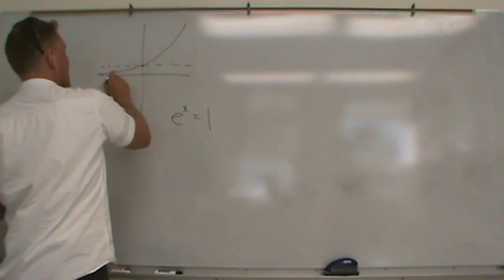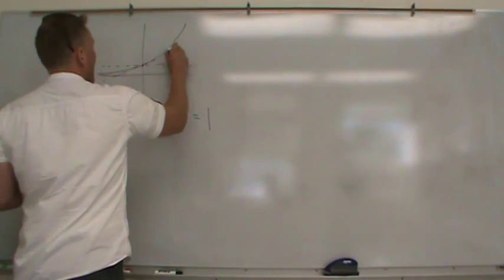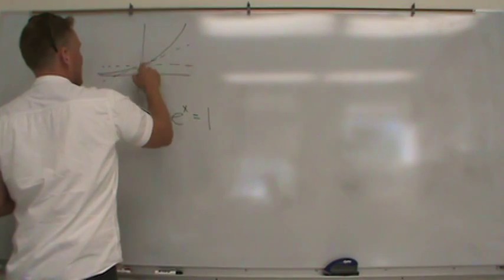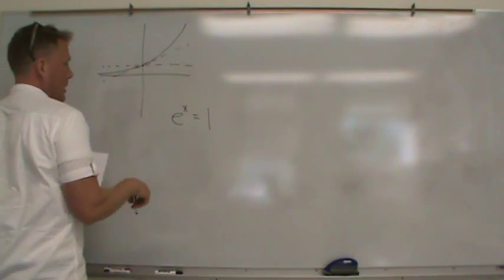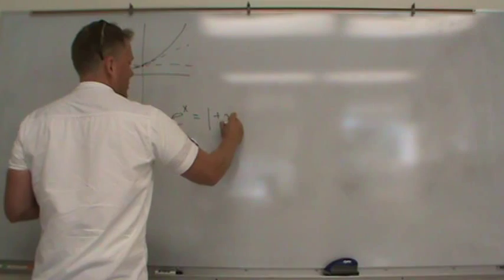Then you go to higher order terms, you get a linear term, and that's even better. It's almost like a tangent line at that particular point, right? So that's our second term for e to the x.